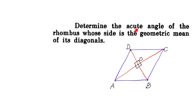Determine the acute angle of the rhombus whose side is the geometric mean of its diagonals. We have to find out the acute angle of the rhombus whose side is the geometric mean of its diagonals.